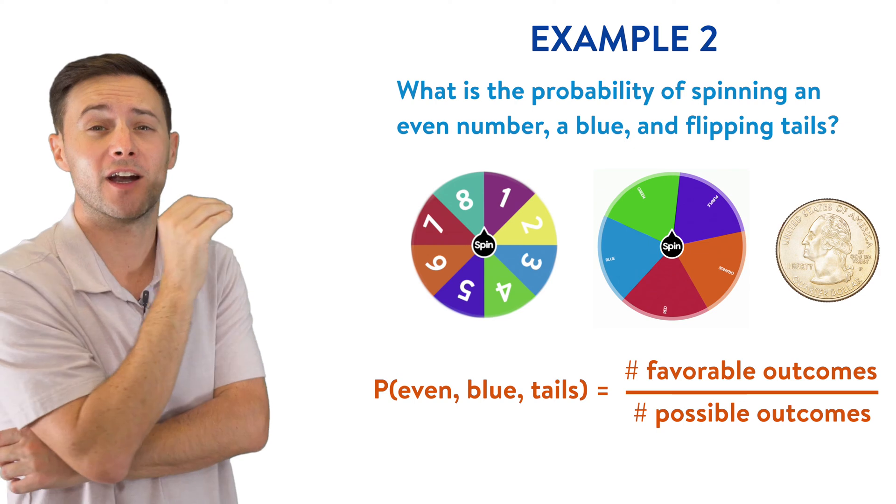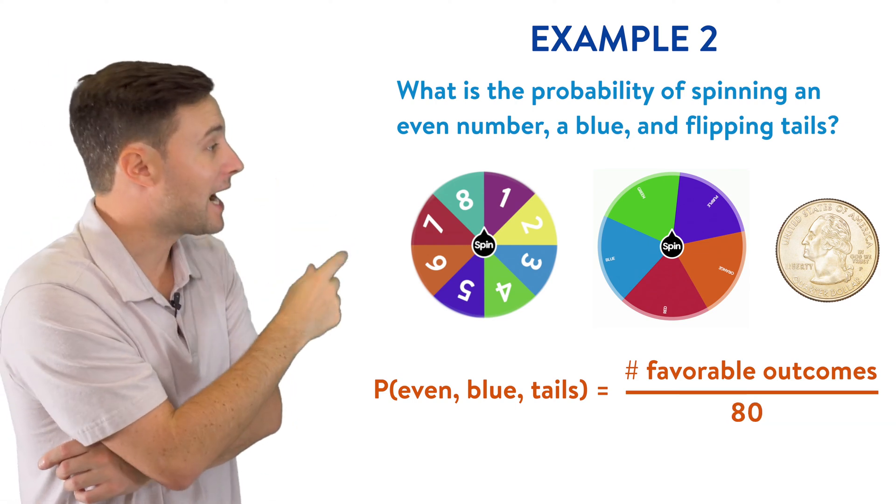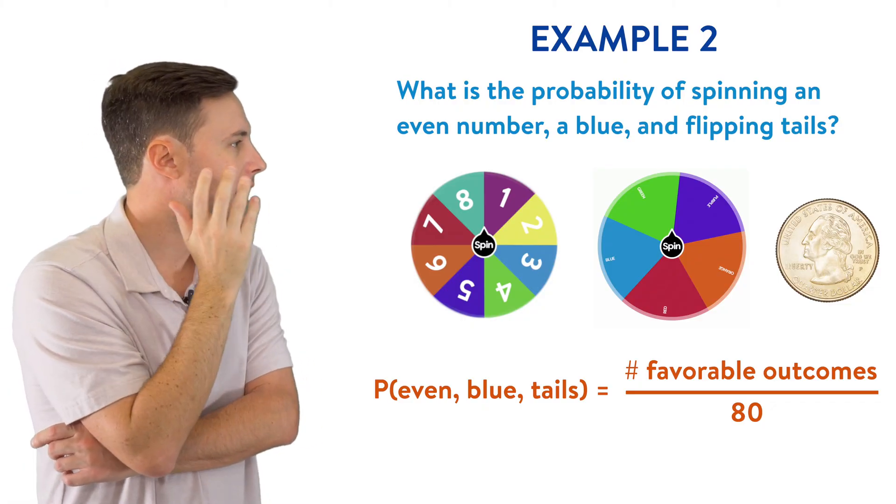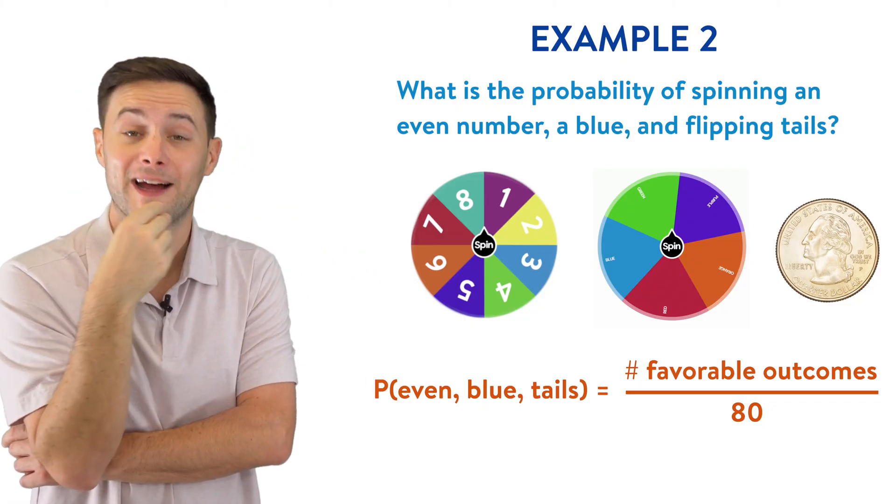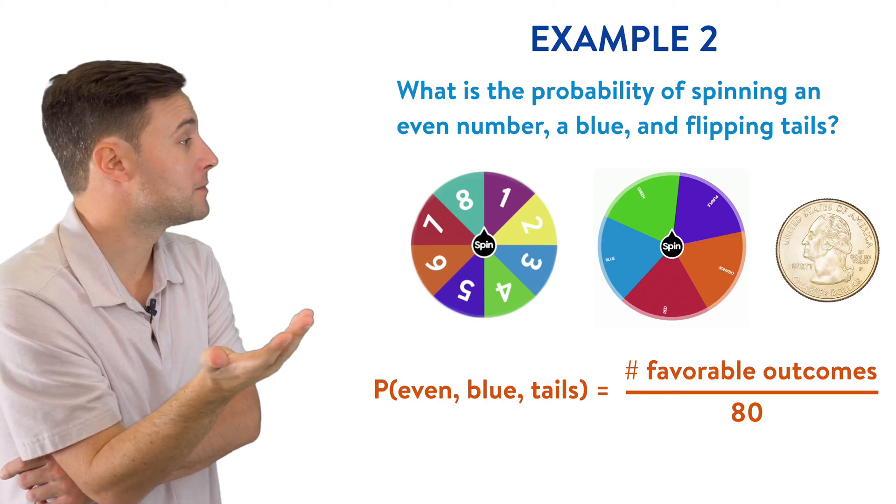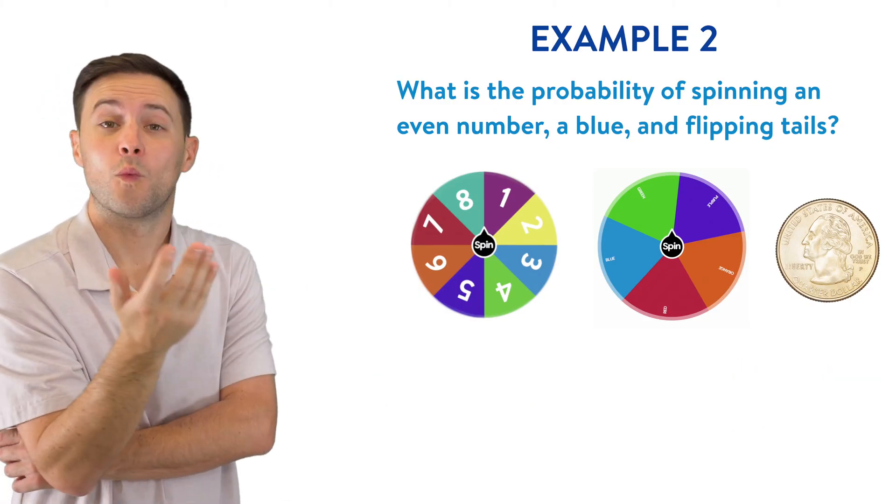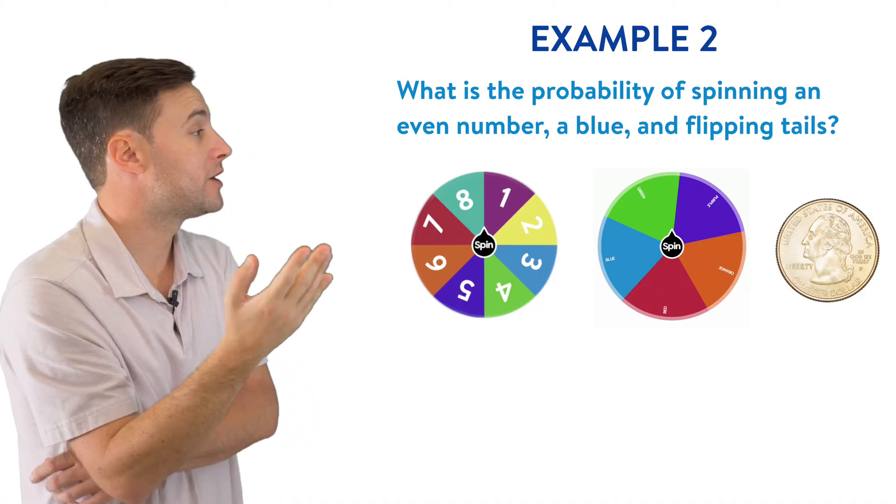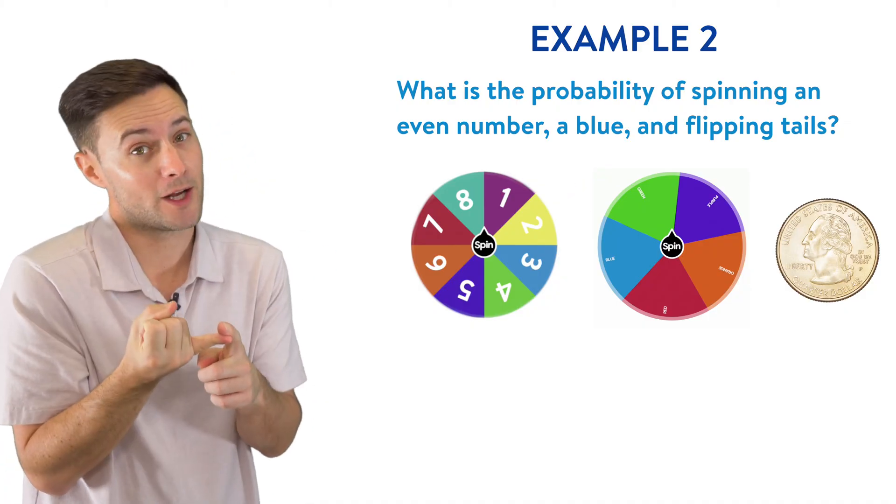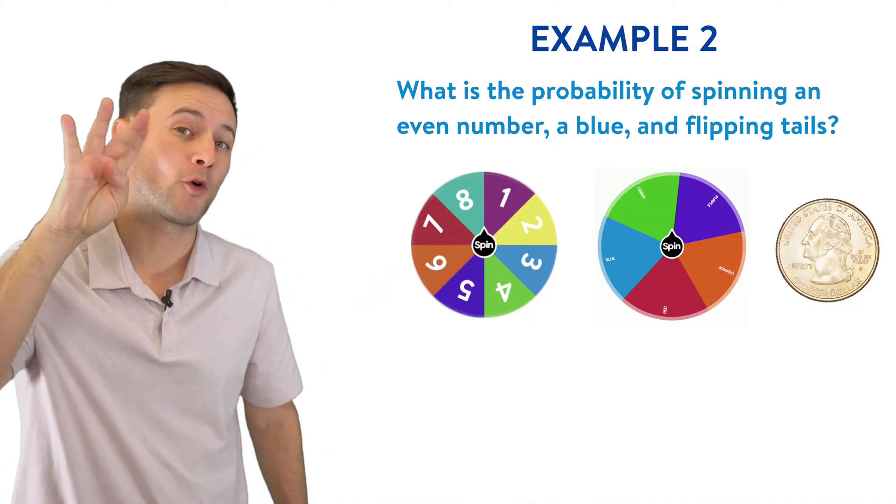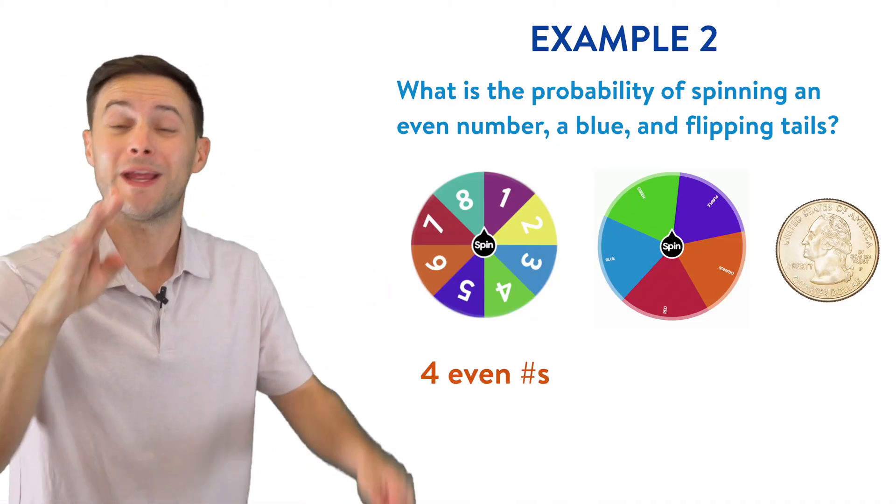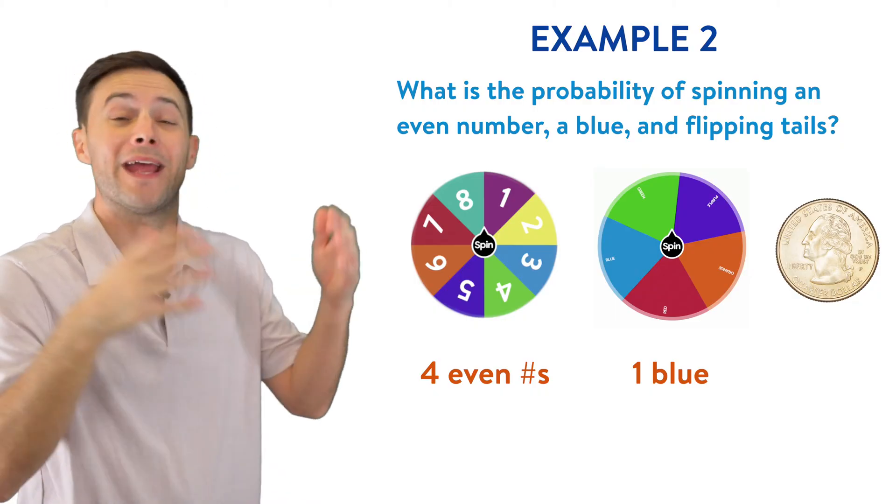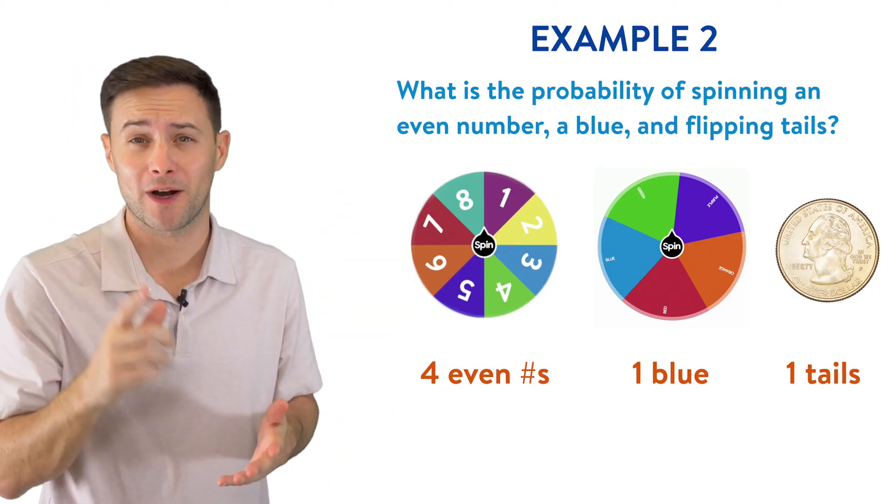Great, that goes in our denominator. Now, for the probability of an even number, a blue, and a tails, we need to find how many favorable outcomes there are. What are our options for an even number? Let's start there. We could get a two, that's an even number, a four, a six, or an eight. So we've got four options there. Then we have to choose a blue, so we only got that one option there. And then we have to flip a tail, so we only got one option there.